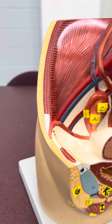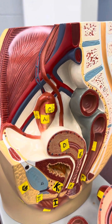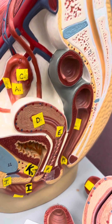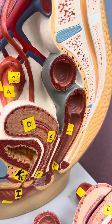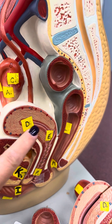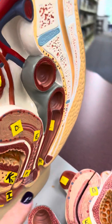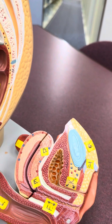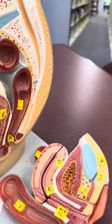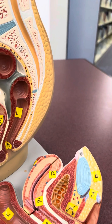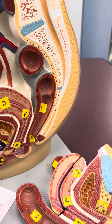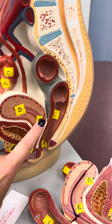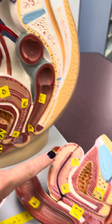So depending on where you are — D, this would be the uterus. Here's the uterus on this side, and here's the other part of the uterus. E is the cervix, which is just the bottom of the uterus.